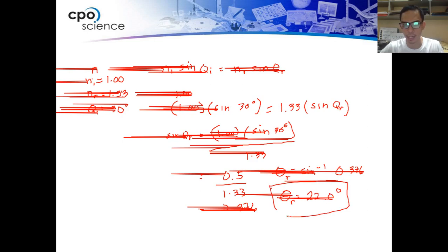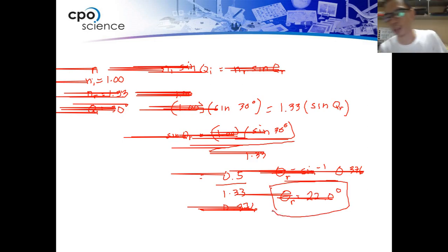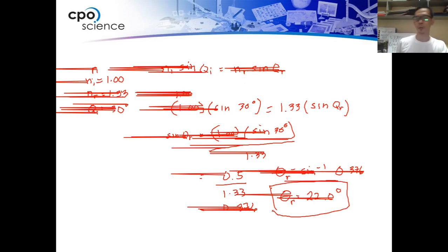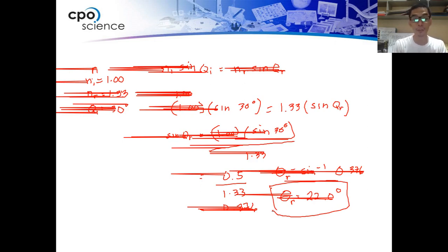Meaning to say that the light ray will be refracted at 22 degrees towards the normal line in this sample problem.